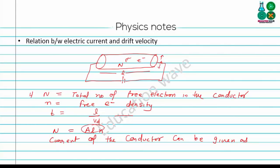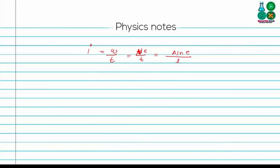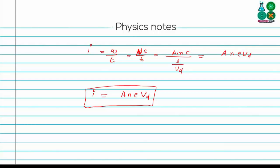Now substituting the value of T, which is L / vd, we get I = n·A·e·vd. So the relation between current and drift velocity is I = n·A·e·vd.